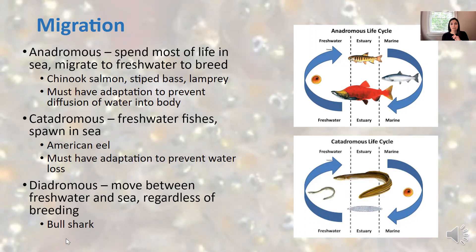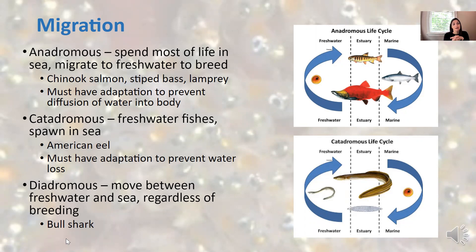In order to be anadromous, fish have to have an adaptation to prevent diffusion of water into the body. Because if they've been living in saltwater and all of a sudden they move to freshwater, the tendency would be for water to kind of flood in. So they have adaptations to prevent that.